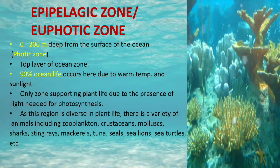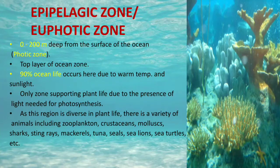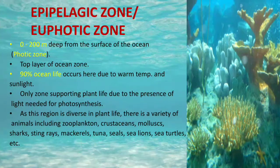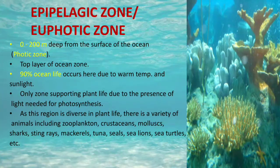The first vertical zone is the epipelagic zone, from 0 to 200 meters deep from the surface of the ocean. It is the top layer of the ocean, and 90 percent of ocean life occurs here due to warm temperature and sunlight, which penetrates well into this zone.